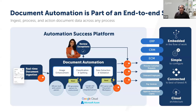Document automation is now part of an end-to-end solution. We have the Automation Success Platform in which document automation is fully integrated. Earlier we had a product called IQ Bot, which could be installed separately and then called from the A360 platform. Now, document automation is built from the ground up — it's totally integrated, so no separate installations are required, and it works seamlessly across each level of the product.